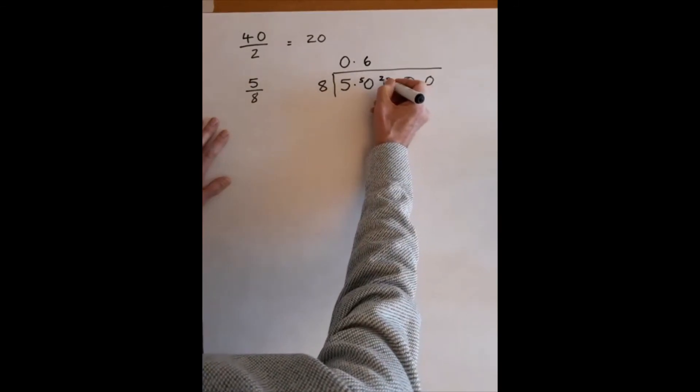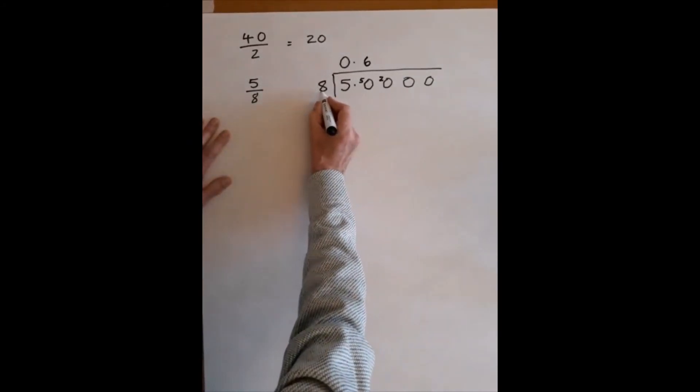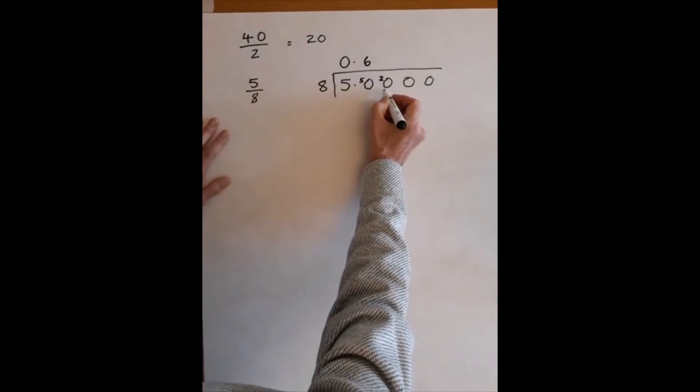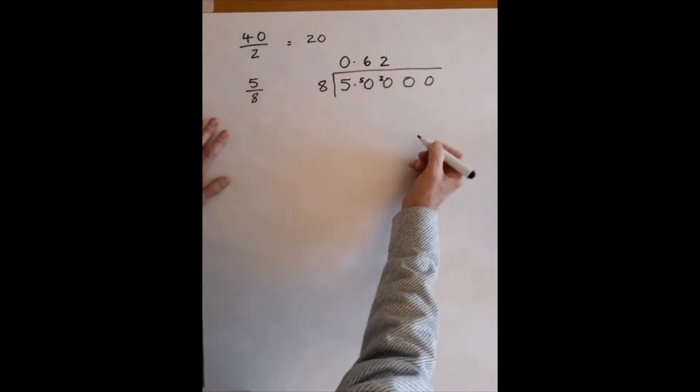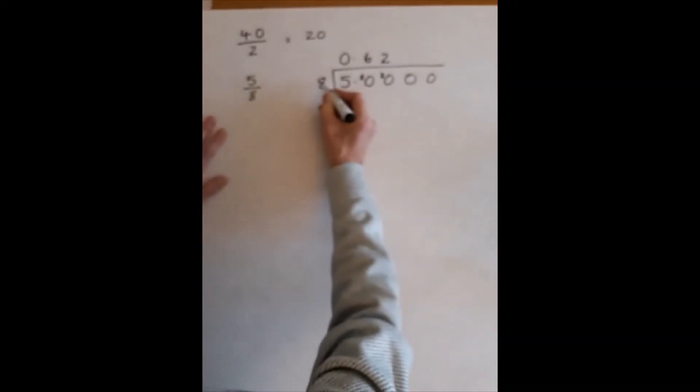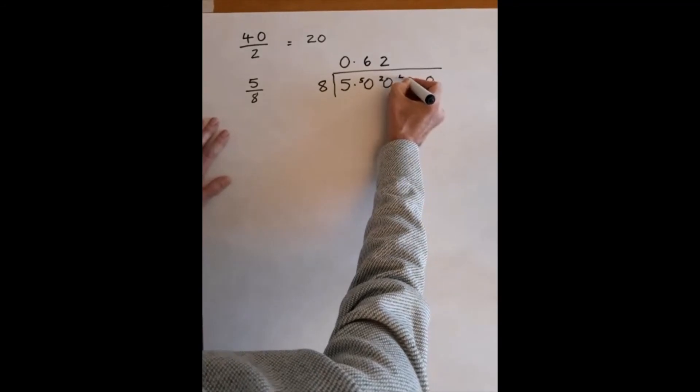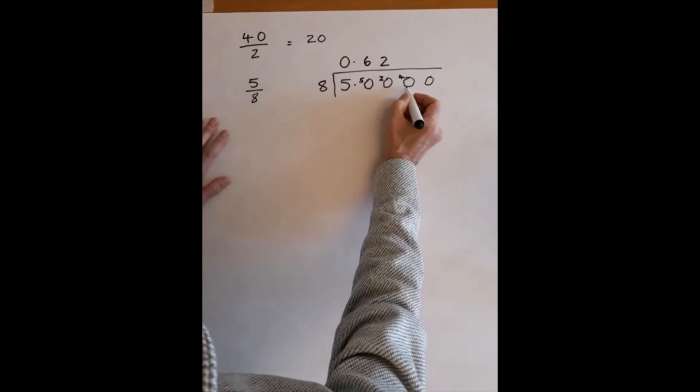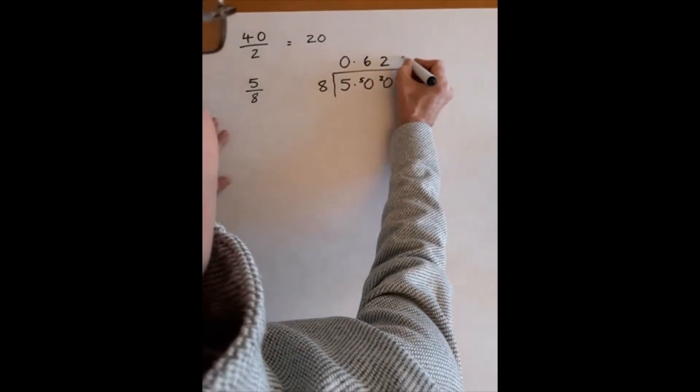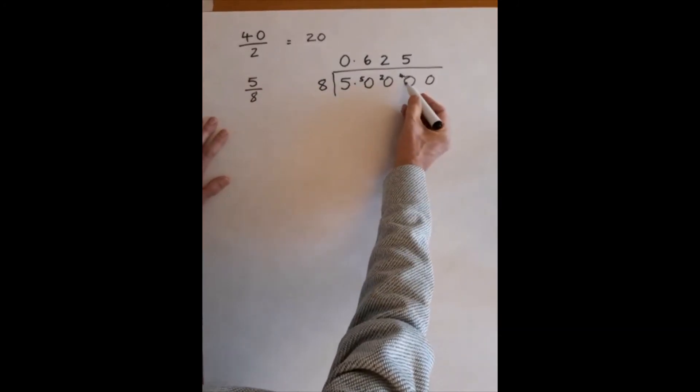So we write the bit that we carry over there. So we ask, how many times does 8 go into 20? It goes twice. And 2 times 8 is 16, and we started with 20, so the difference there is 4. How many times does 8 go into 40? The answer is 5, and it goes completely. 5 times 8 make 40, so we're not going to need this. And this is our answer: 5/8 is 0.625 as a decimal.